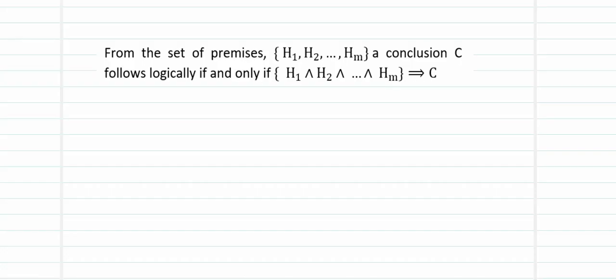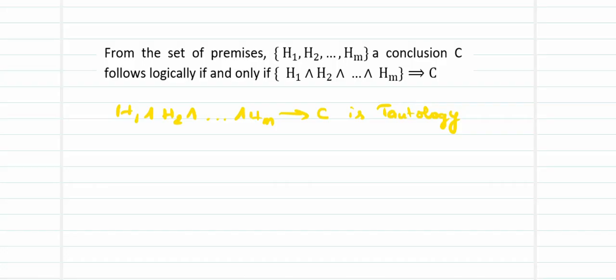In other words, H1 and H2 and Hm conditional C must be a tautology. A tautology is a statement which has all its entries equal to true for all possible combinations of H1 and Hm that we take.